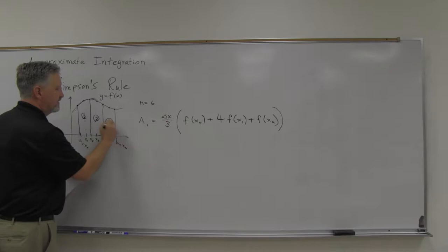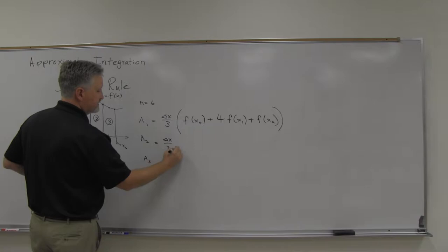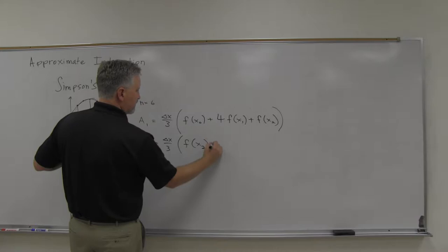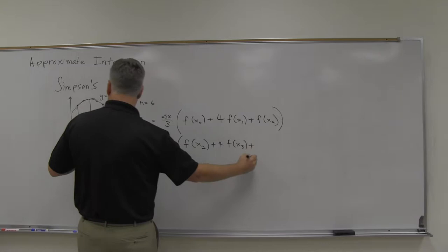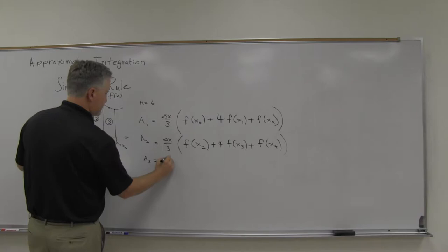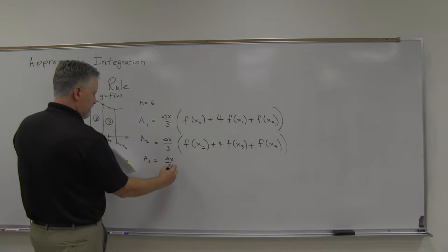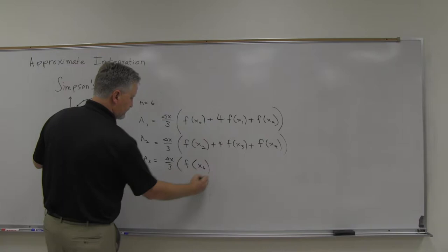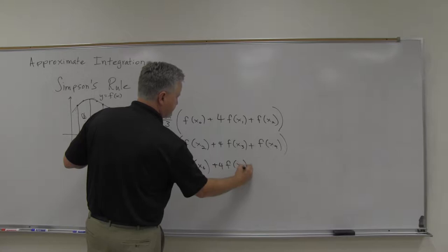It turns out a2 and a3 are very similar. If you find those areas: a2 is delta x over 3 times f of x2, plus 4 times the middle one f of x3, and then f of x4. And then a3 is delta x over 3 — if you're interested in why it's delta x over 3, see that in the book — times f of x4, plus 4 f of x5, and then f of x6.